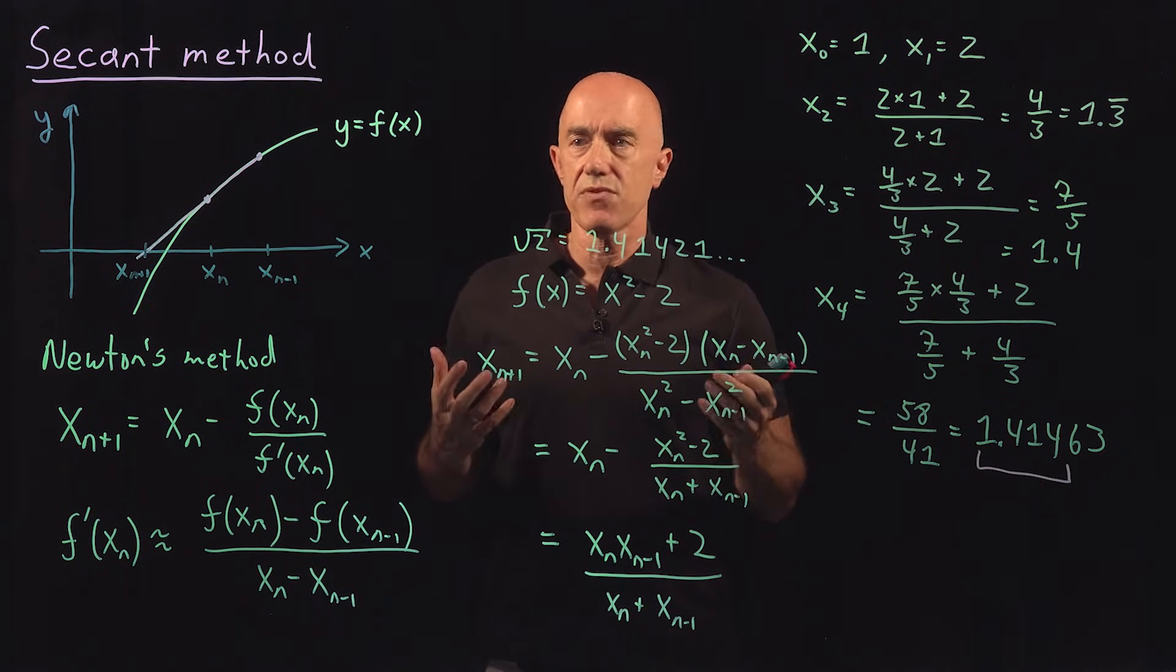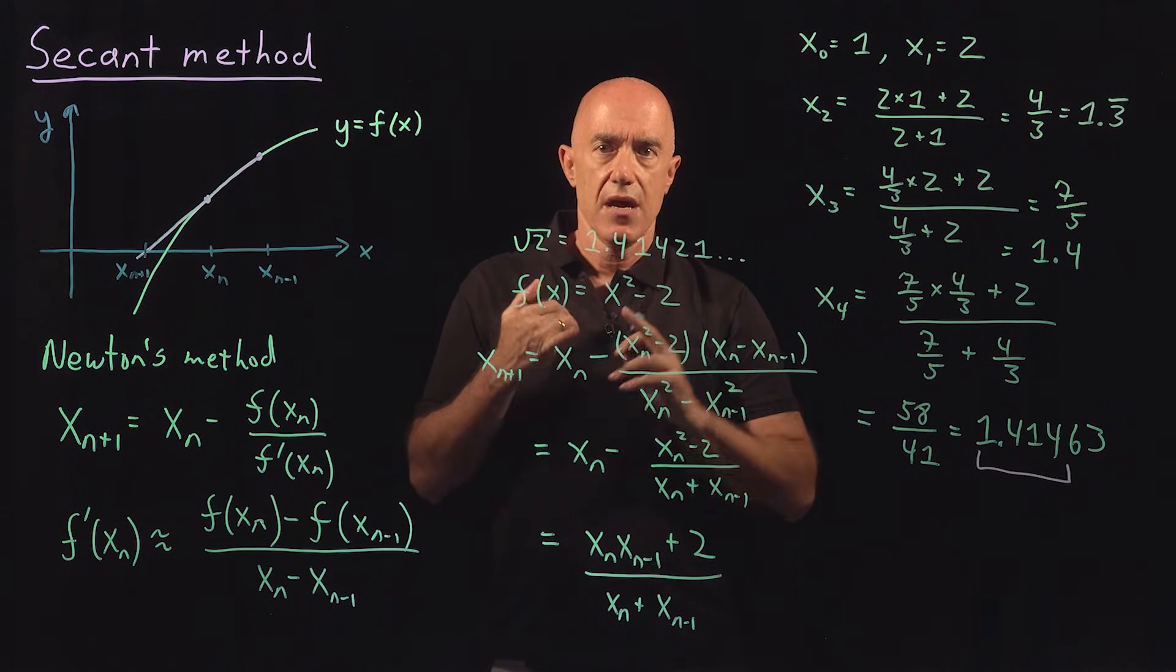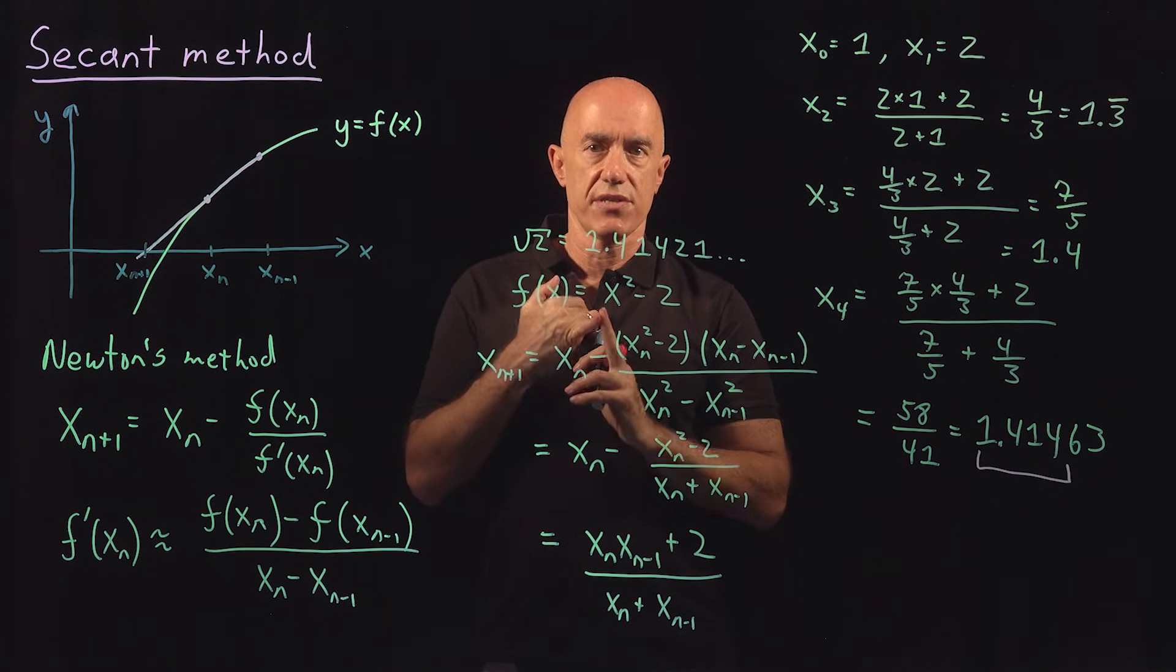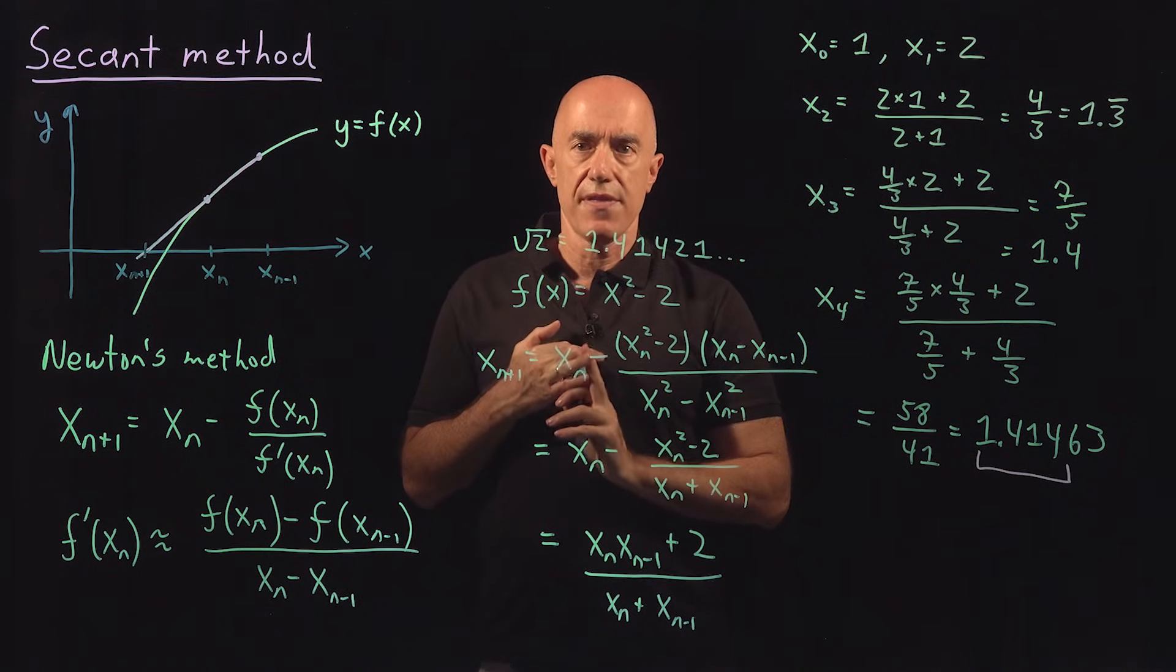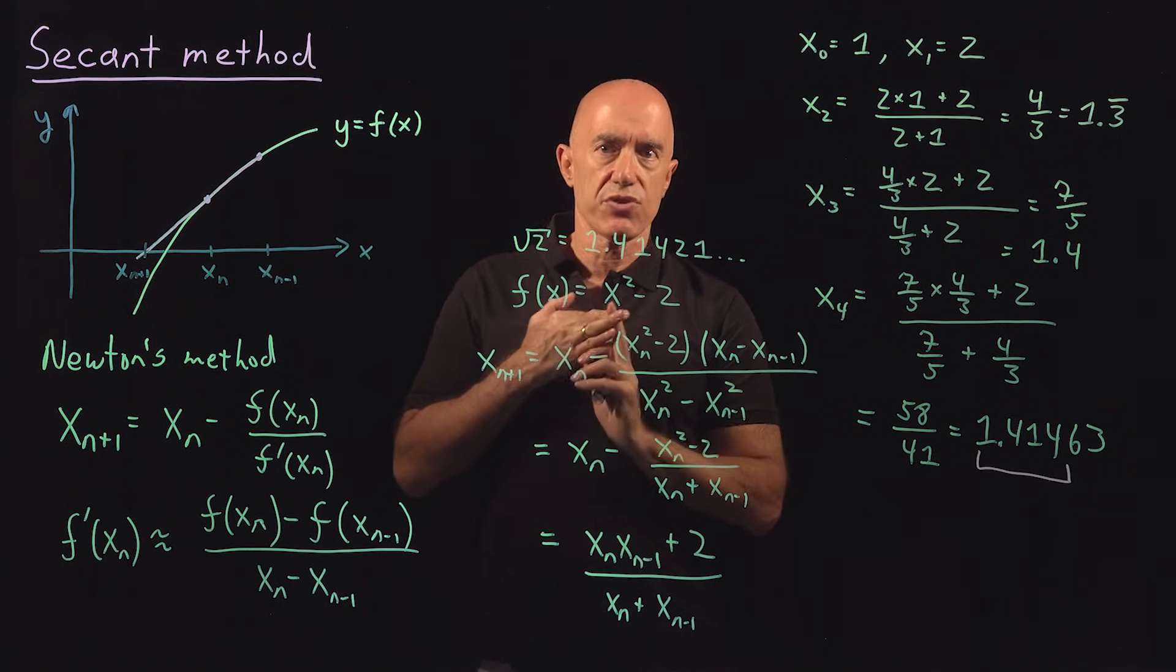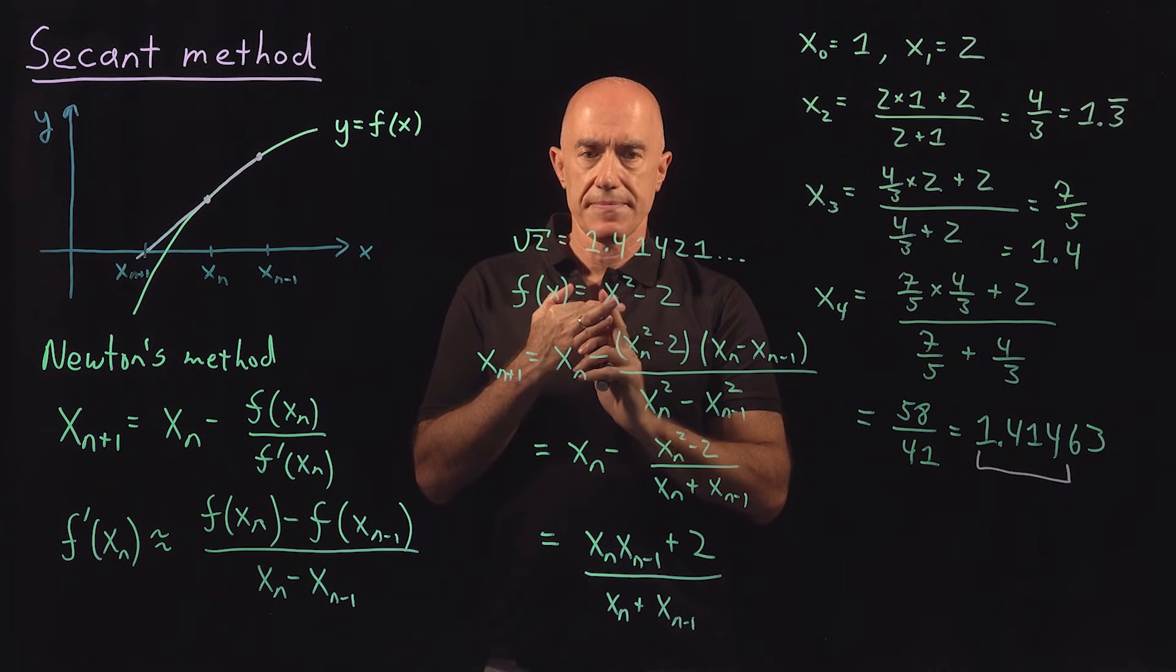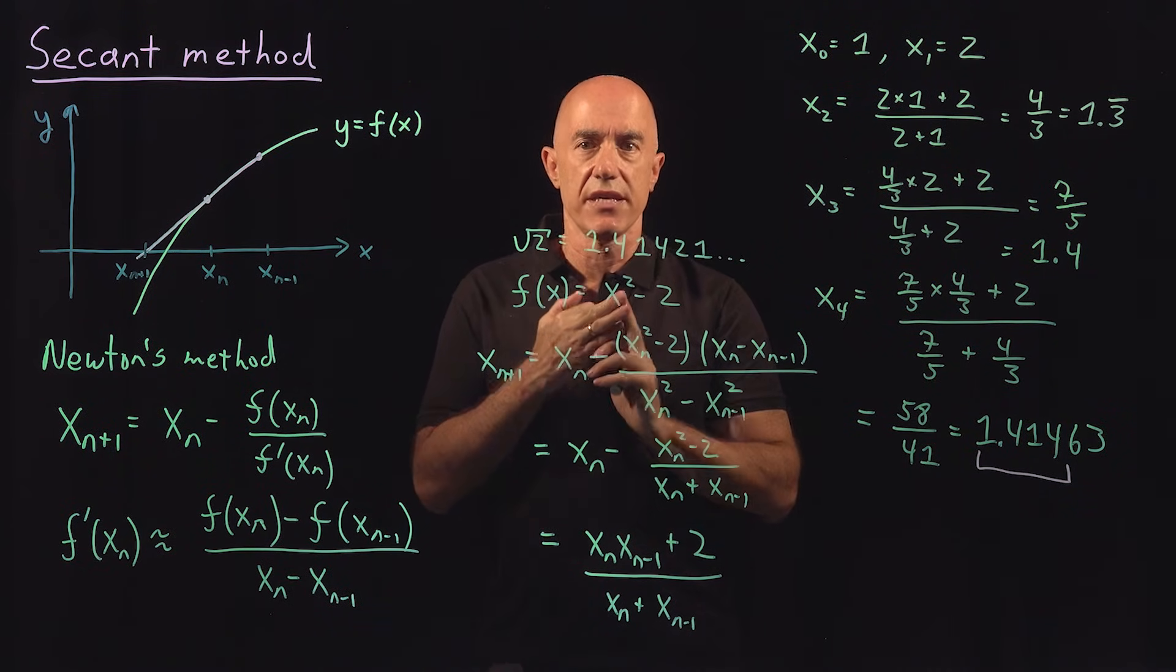Let me summarize. We've learned the bisection method. You keep the root bracketed, so it always converges, but the convergence is very slow. We learned Newton's method. You have an initial starting guess for the root. You have to be able to take the derivative of the function analytically, and then the convergence is very fast.